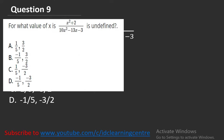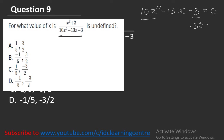Question number 9: For what value of x is (x squared plus 2) divided by (10x squared minus 13x minus 3) undefined? To solve this, we need to factorize the denominator, which is a quadratic equation: 10x squared minus 13x minus 3 equals 0. Multiply the first and last coefficients: minus 3 times 10 gives minus 30.